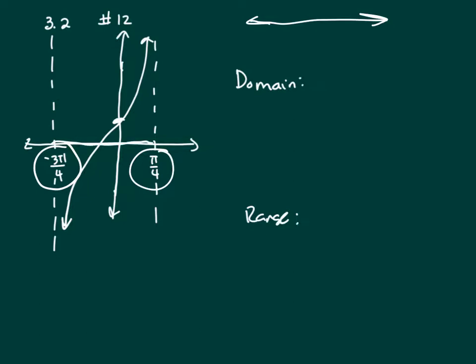So it's got a hash line, so that means it gets closer and closer to that line, but never intercepts it. So that means your domain starts at negative 3 pi over 4, and it goes to pi over 4.